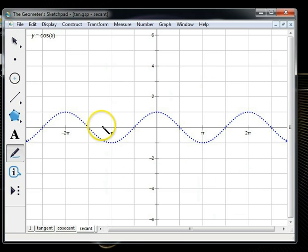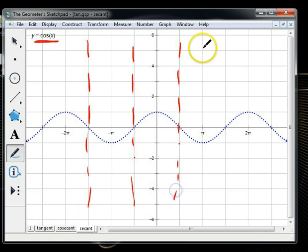Now that we know how to do cosecant, I bet you can figure out how to do secant. We're going to start with cosine, because secant is reciprocal of cosine. We're going to put asymptotes at all the x-intercepts of cosine.